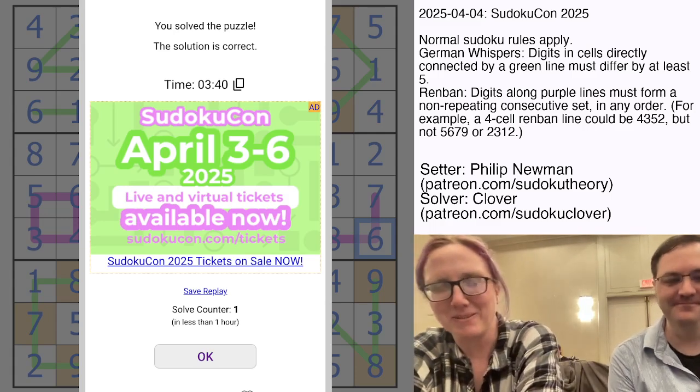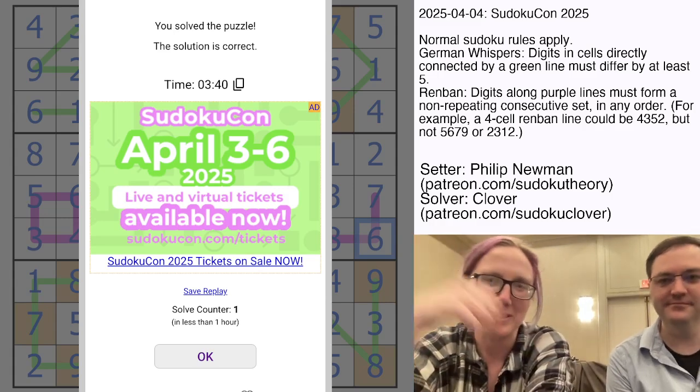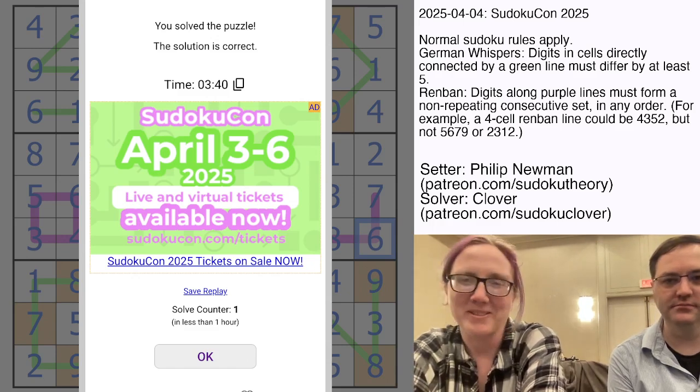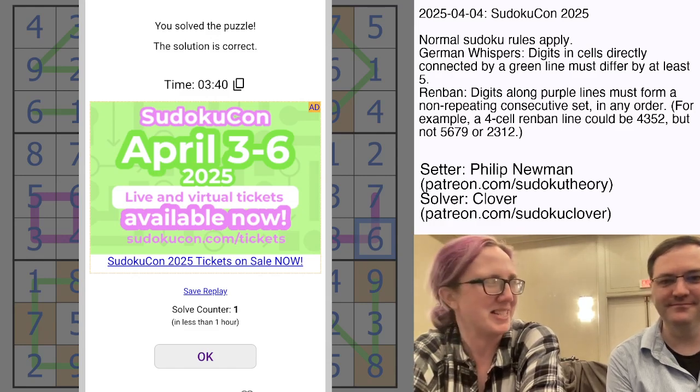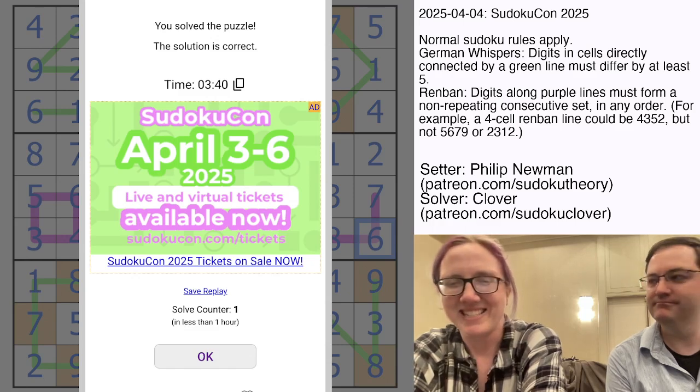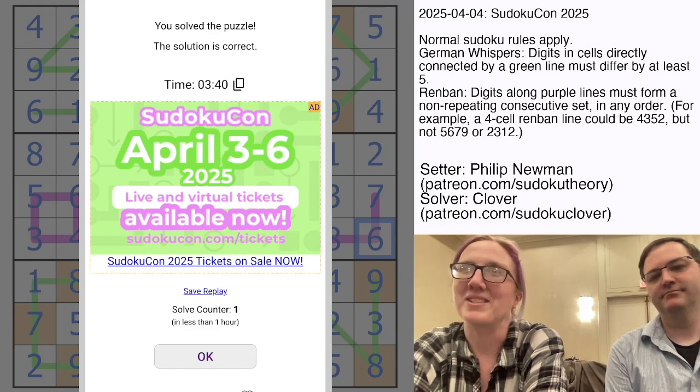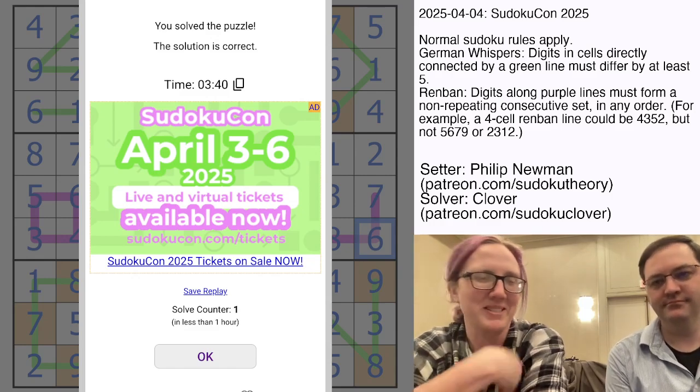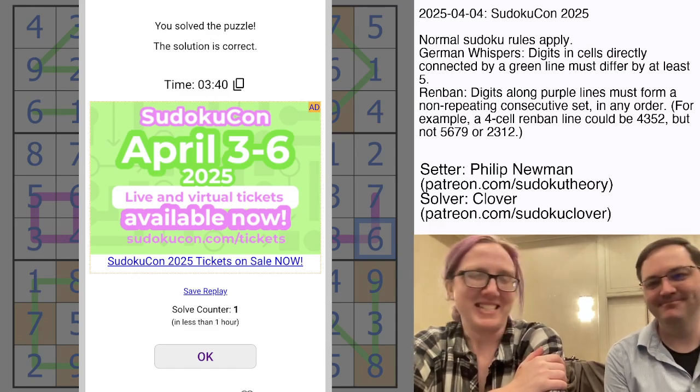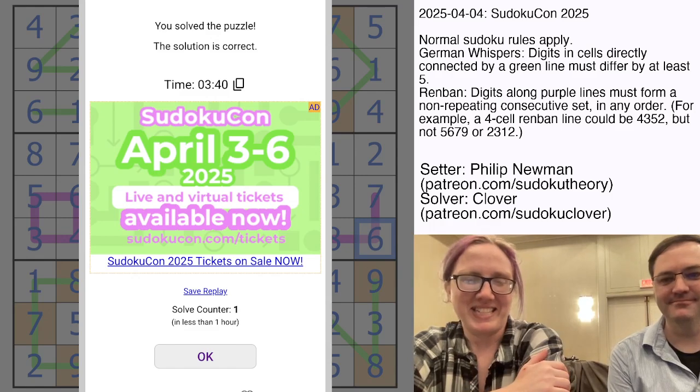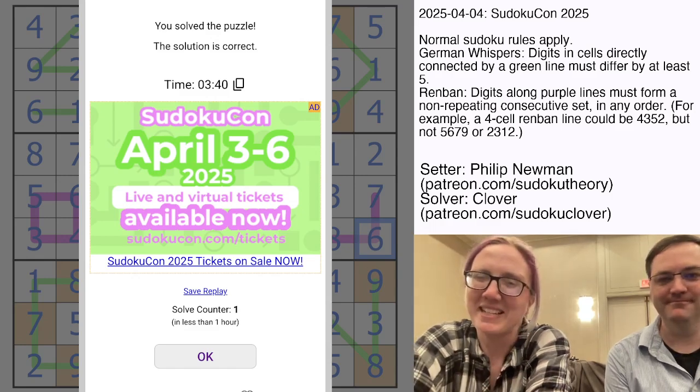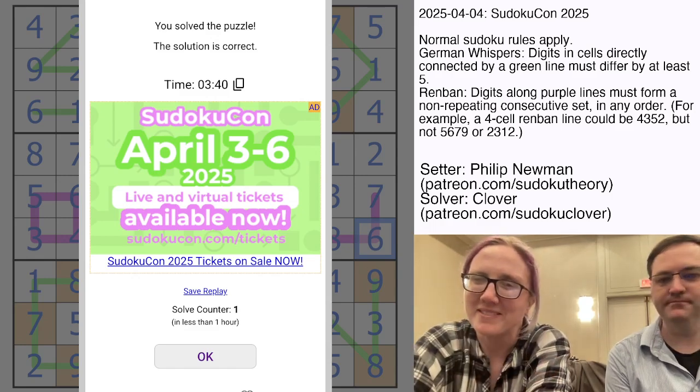That is how you solve Philip Newman's lovely SudokuCon 2025. Come to SudokuCon 2025. We have live stream tickets. Come see us. SudokuCon.com slash tickets. I'm doing a contest. Just one cell, like spot the one cell that you can fill in in a really hard puzzle. Philip was invited to tell us the hardest things about classics. But anyways, come hang out. Say hi if you're here. Thanks for watching. See you next time.